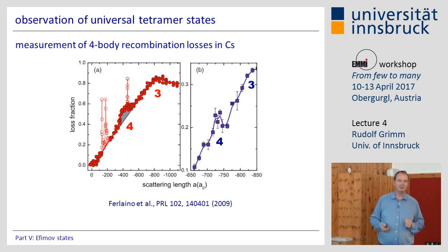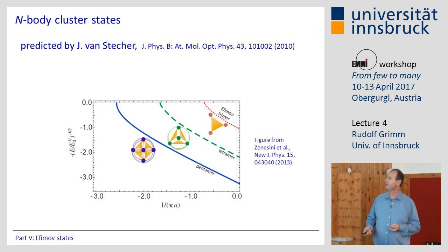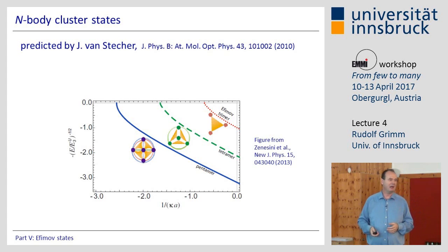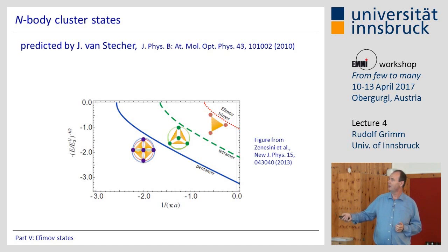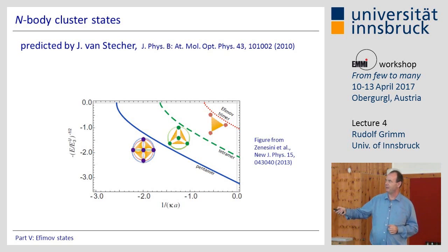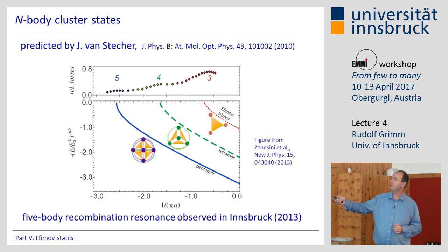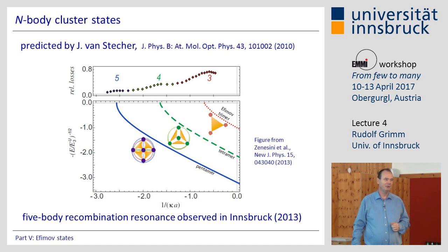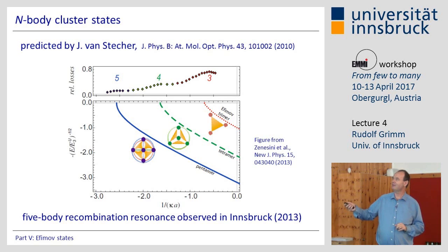This was not the end of the story: with four-body states established, one asks about five-, six-, and n-body states. This was addressed theoretically by Javier von Stecher, who predicted the story continues — five-body, six-body, and general n-body states associated to each Efimov state. This was a challenge for us experimentally. Looking on the negative-A side, we have trimer, tetramer, and pentamer states. We observed three-body recombination, four-body, and a small reproducible bump indicating five-body recombination, giving us reason to believe the general theory on n-body cluster states is correct.